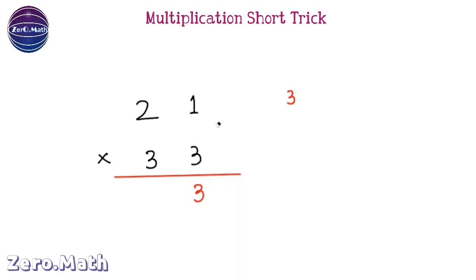Now in the next step, we have to cross-multiply. That means 2 into 3, 6. And then 3 into 1, that is 3. Now we have to add these two. 6 plus 3 is 9. We have to put 9 here.